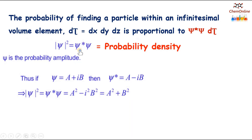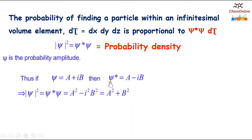ψ* represents the complex conjugate, because ψ is a complex function. So if ψ = a + ib, which is a complex function, then the conjugate will be ψ* = a − ib.